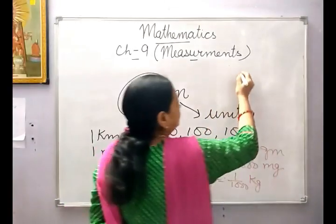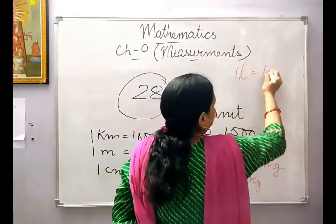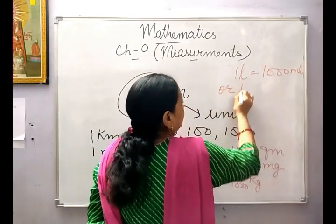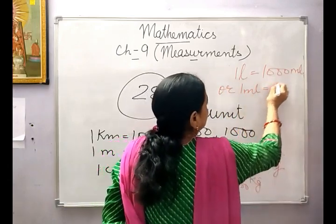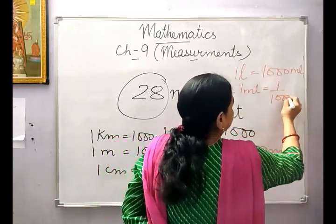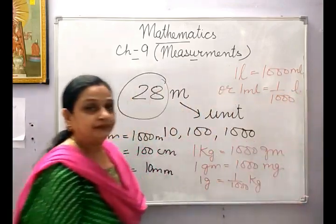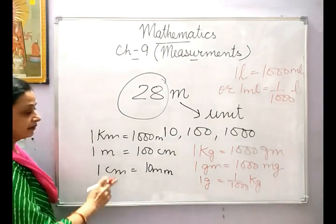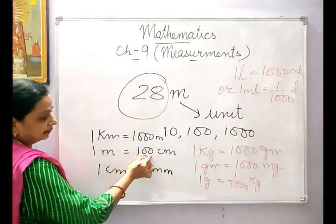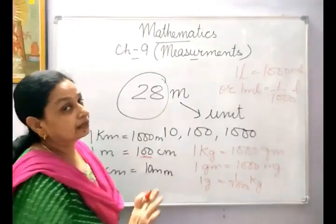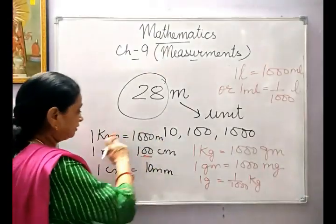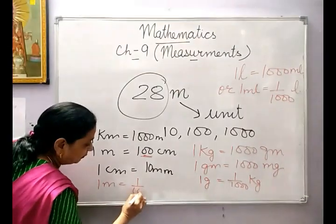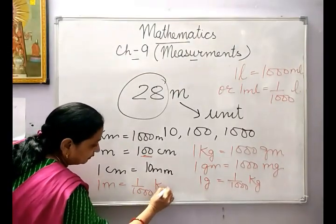Similarly for litre: 1 litre is equal to 1000 millilitres, or we can say 1 millilitre is equal to 1/1000 litre. Only remember that this metre-to-centimetre conversion is 100, otherwise all others are 1000. 1 metre is equal to 1/1000 kilometre when moving from smaller to higher unit.